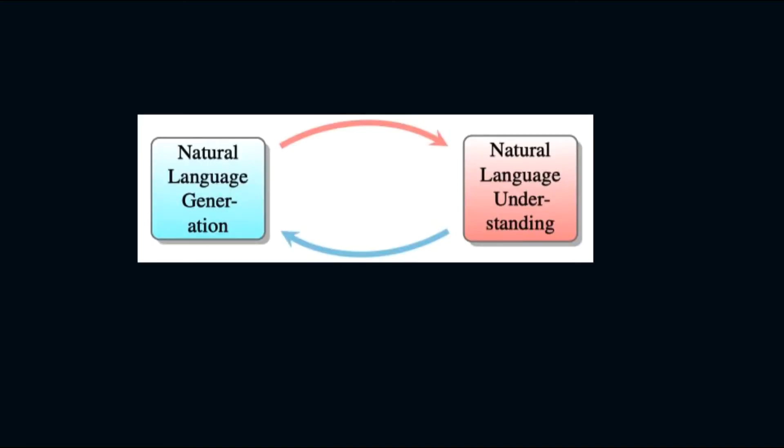When two people talk, at least two things are going on. Natural language understanding, meaning that each party understood what the other person said. And natural language generation, the formation of spoken responses. A dialogue-based NLP system needs the ability to understand what a human said, and then the ability to generate an appropriate response.